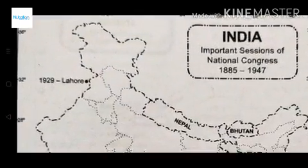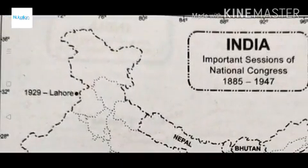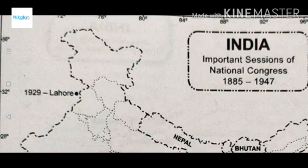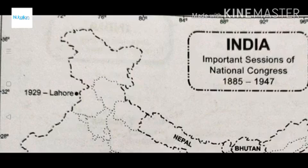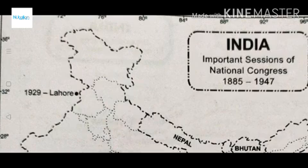One of the most important sessions is Lahore, which is near the Wagah border. If anyone has visited Amritsar or the Wagah border, they would relate to it. Lahore 1929 is important because in this session the Indian National Congress took a pledge that they wanted Purna Swaraj — complete independence — rather than just dominion status.